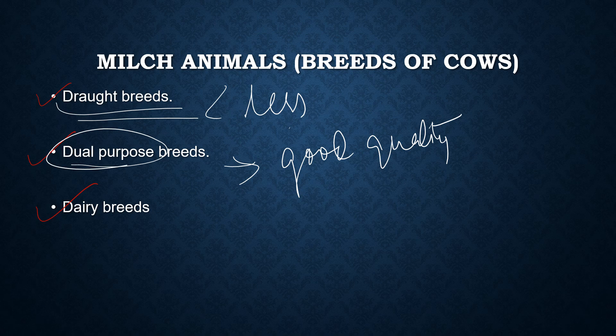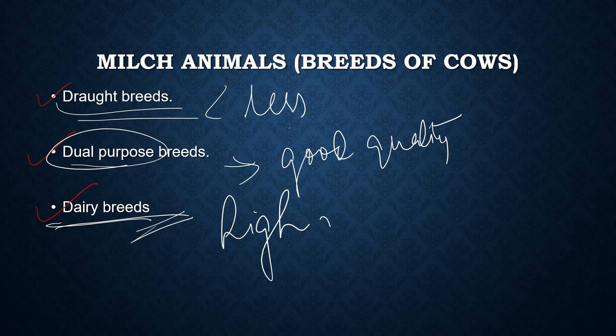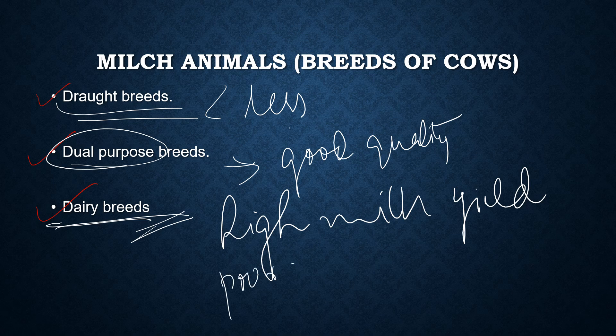Dual purpose breeds can do both work and yield good quality milk. The third category is dairy breeds — these are high milk yielders, but their bullocks are poor for drawed purposes; they cannot pull bullock carts or plow land effectively. So there are three types of cow breeds: drawed breeds, dual purpose breeds, and dairy breeds.